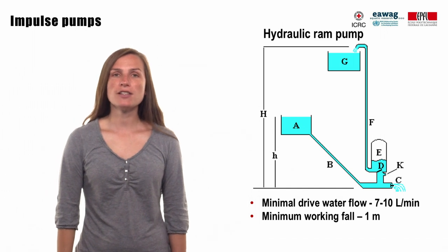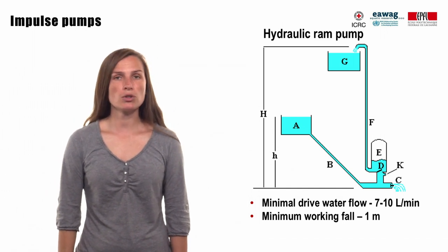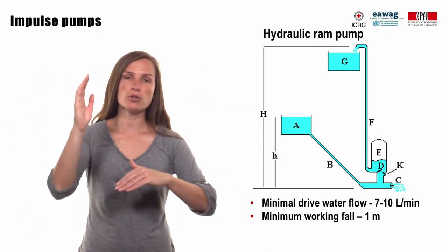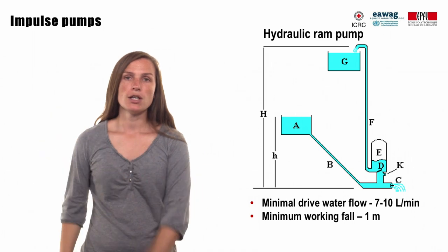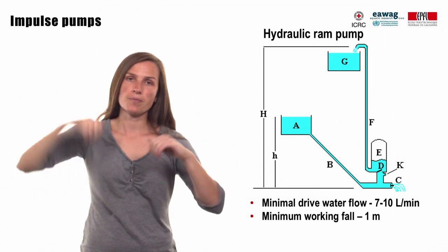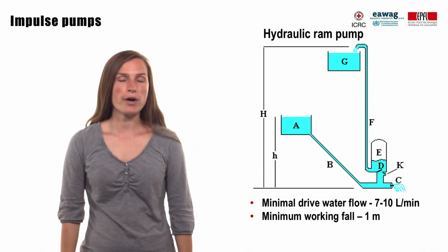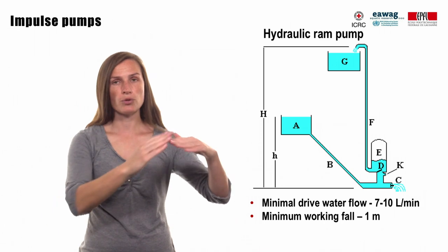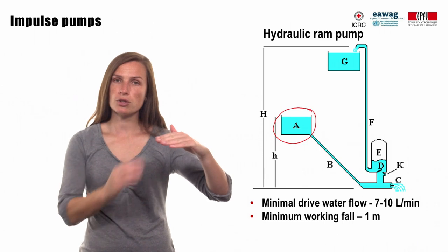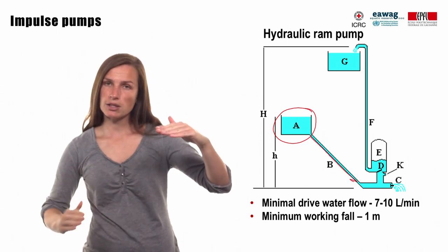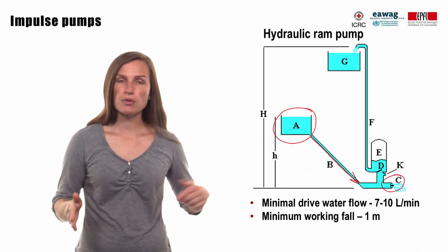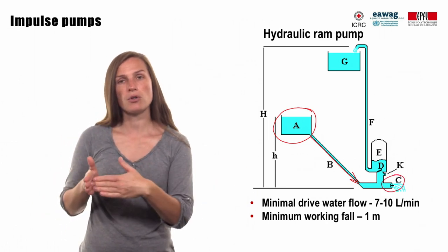A hydraulic ram pump uses height difference and the water hammer effect to develop pressure, which allows a part of the input water to be lifted higher than the water source without any external energy supply. Each 1 meter difference in the feed pipe can pump water almost 30 meters up. Hydraulic ram pumps require two things: a reliable source of running water and a working flow. Water flows from the source by gravity through a drive pipe, picks up speed and kinetic energy until the increasing drag flow closes the waste valve.